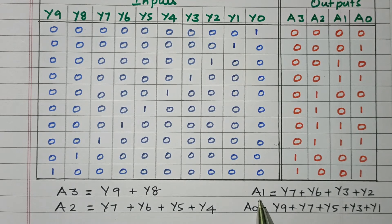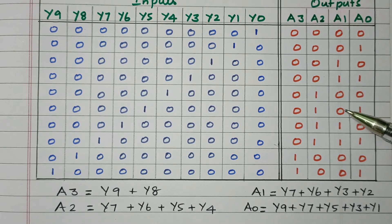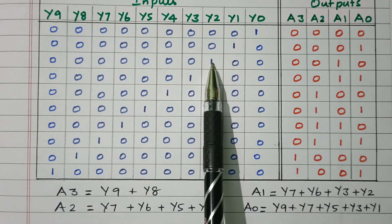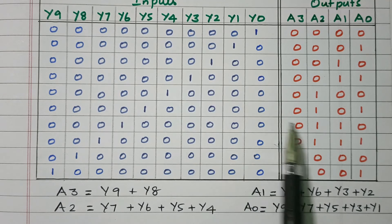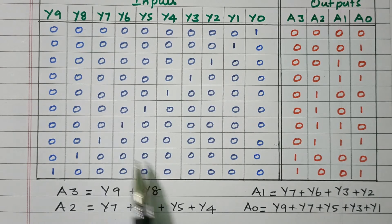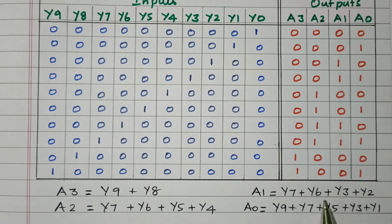Then we go for A1. For A1, two rows are high, then two are low, then two are high again — it alternates in pairs. The corresponding inputs where A1 is high are Y2, Y3, Y6, and Y7. These are all OR-ed together, and all other terms are 0. So the logical expression for A1 is: A1 = Y2 + Y3 + Y6 + Y7.